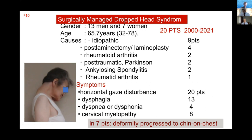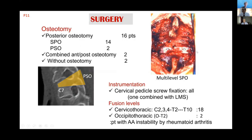All patients complained of horizontal gaze disturbance. Thirteen patients complained of dysphagia, four patients complained of dyspnea, and eight patients had cervical myelopathy. In seven patients the deformity progressed to chin-on-chest. Sixteen patients underwent posterior osteotomy: 14 had a Smith-Petersen osteotomy and two had a pedicle subtraction osteotomy. Two patients required combined anterior and posterior osteotomy. Two patients with flexible deformity did not require osteotomy.